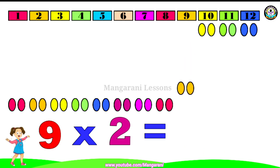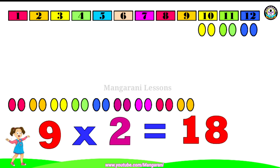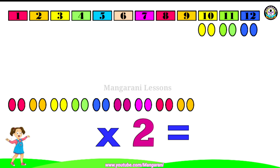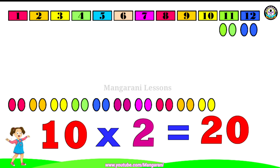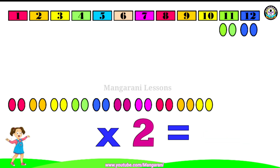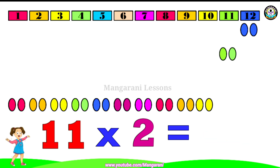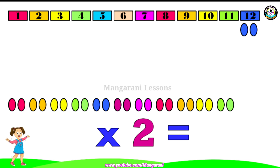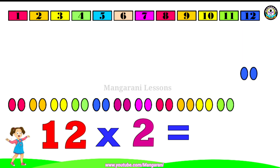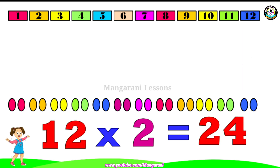Nine twos are eighteen, ten twos are twenty, eleven twos are twenty-two, twelve twos are twenty-four.